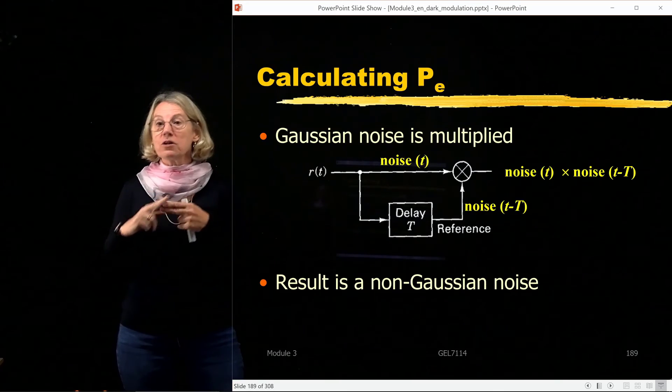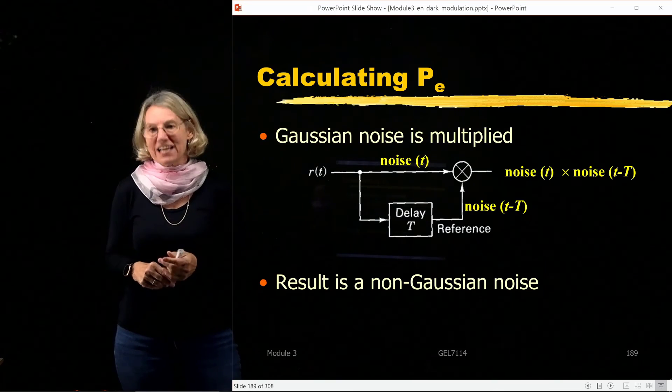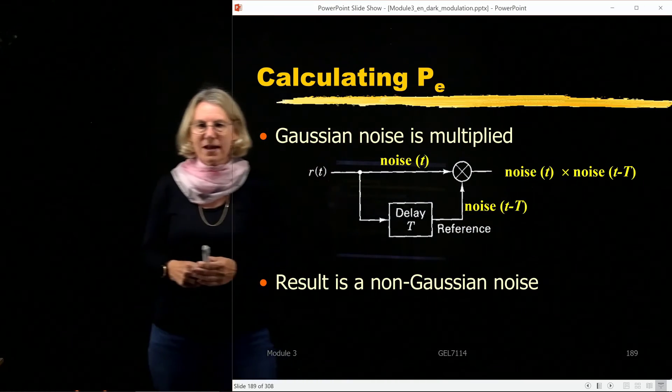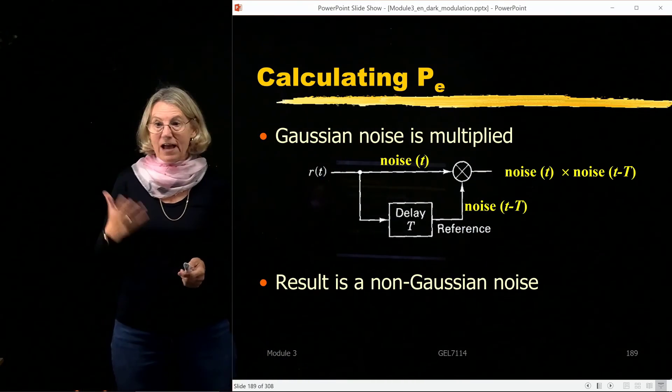If I add them, yeah sure I get another Gaussian, but when you multiply them, no, you get a non-Gaussian noise. So here you have the product of two noise samples, and those are not Gaussian.